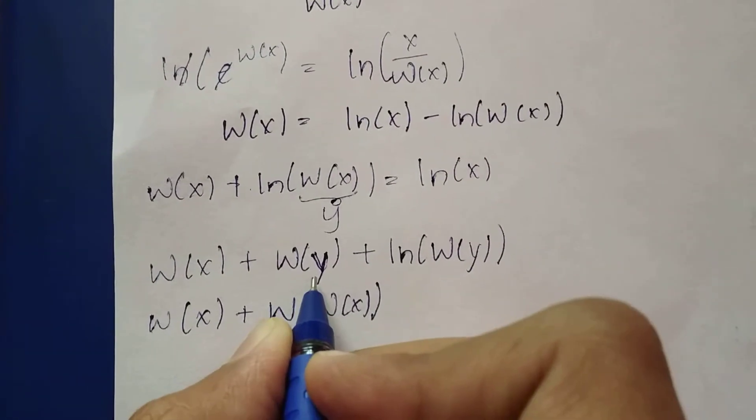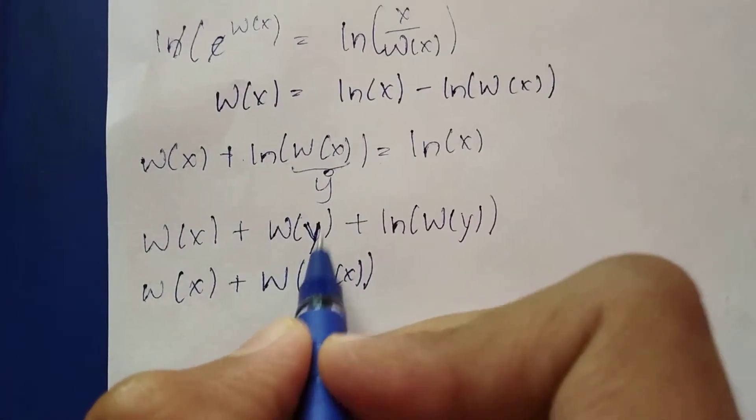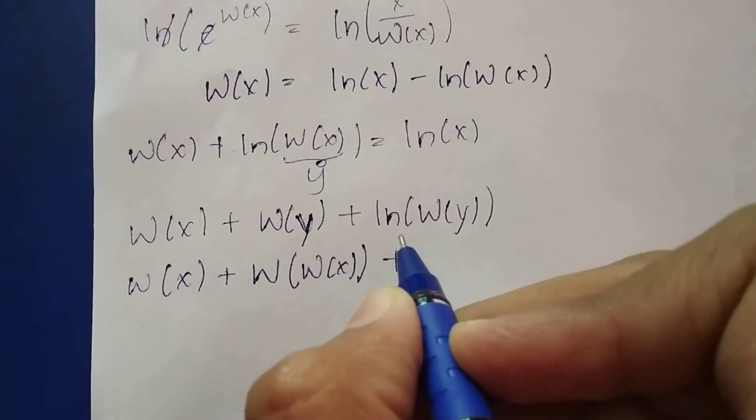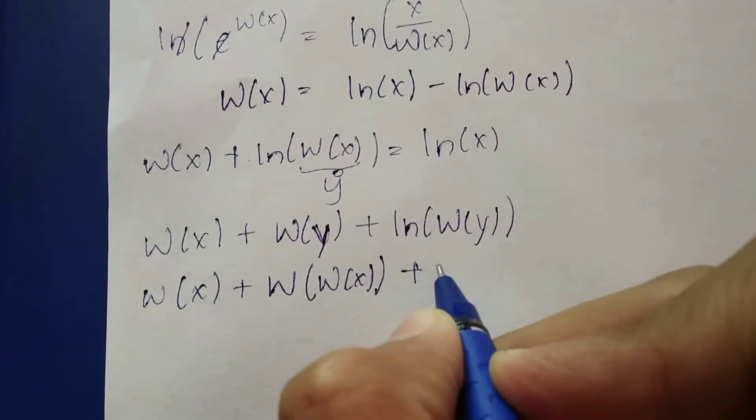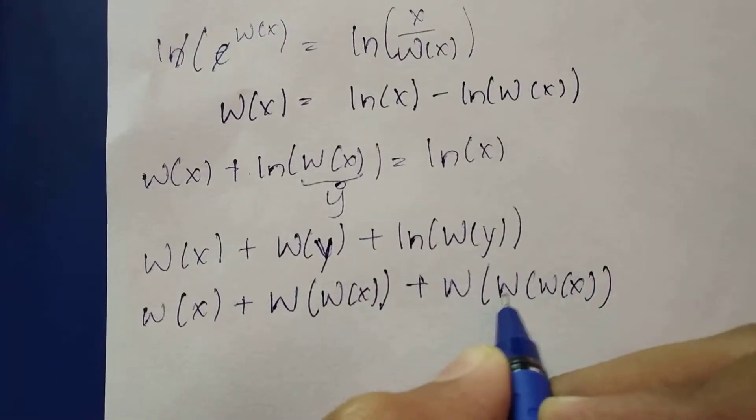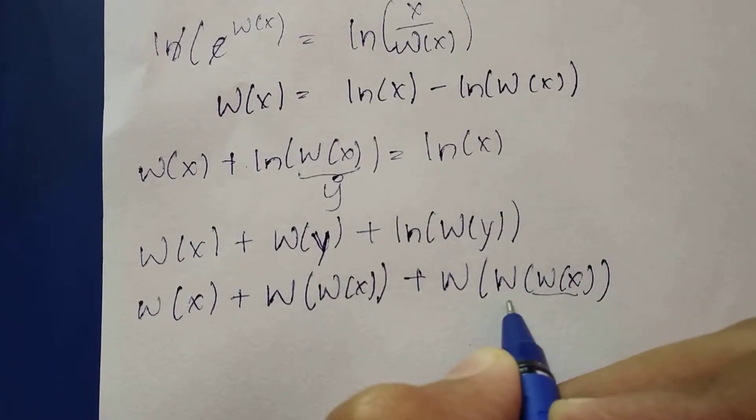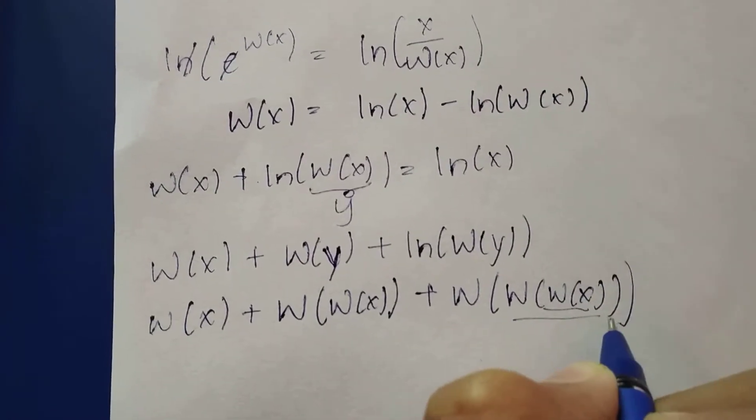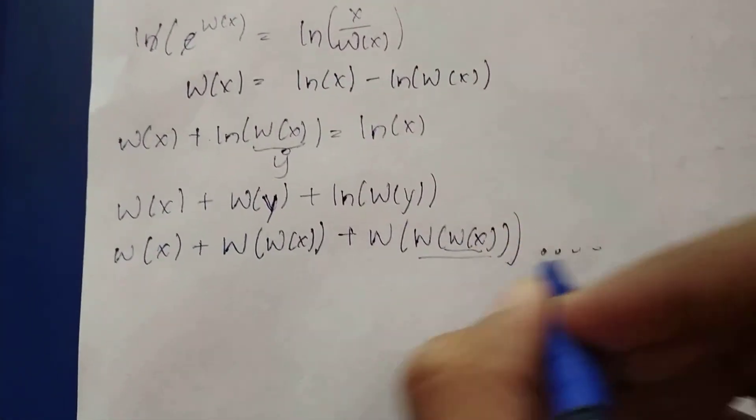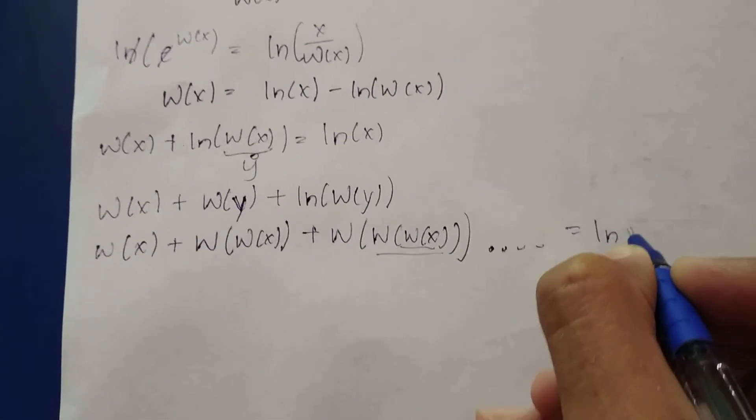Likewise we can use the same procedure here too. It will be W(W(W(X))). First you evaluate this, then this, and then the third part. Likewise, this will move on forever and this is equal to ln(X).